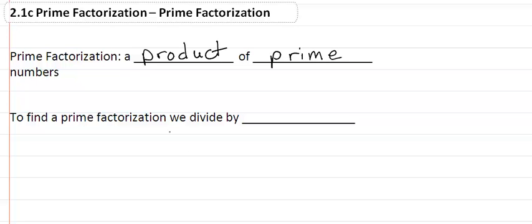To find a prime factorization, we are literally dividing by prime numbers. You can also use composite numbers, but it will take you a little bit longer to do, so just be aware of that.